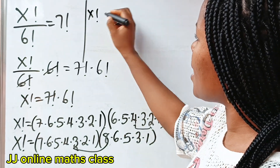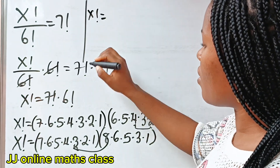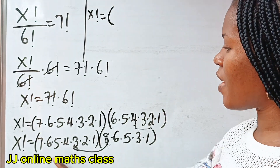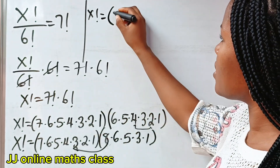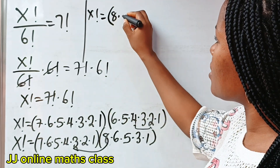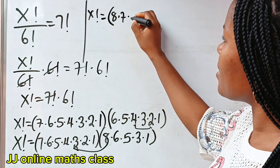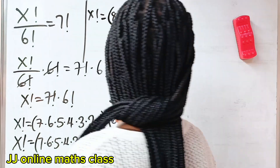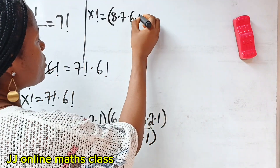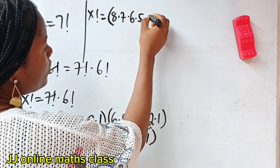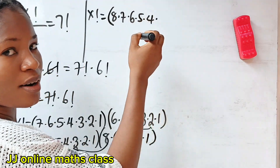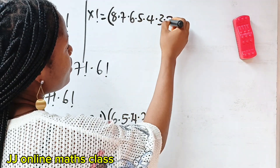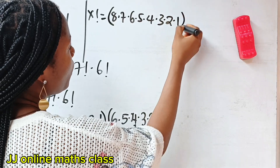So this simply means that x factorial is equal to — we are transferring this 8 to this side. So we have 8 multiplied by 7, multiplied by 6, multiplied by 5, multiplied by 4, multiplied by 3, multiplied by 2, and 1.